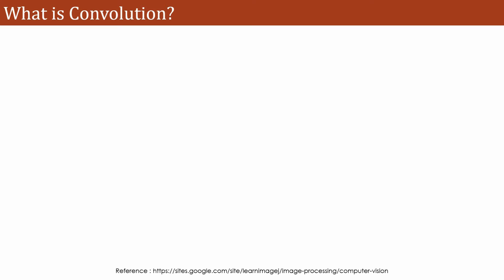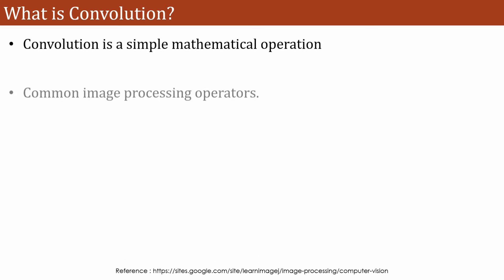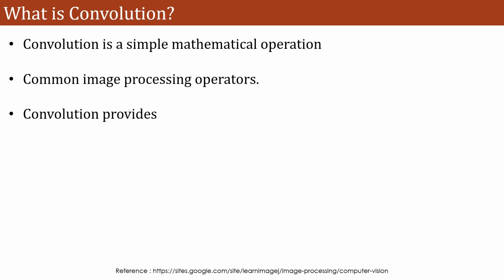What is convolution? A convolution is a simple mathematical operation which is very fundamental and common to image processing. Convolution provides a way of multiplying together two arrays of numbers.